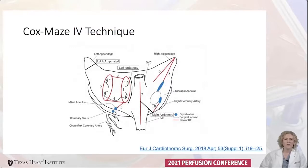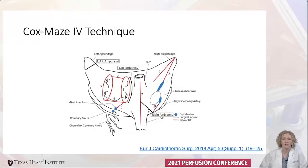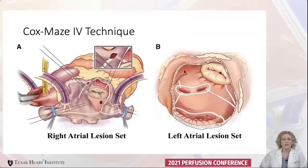The Cox-Maze 4 technique follows the same lesion lines as the Cut and Sew Cox-Maze 3, but uses a combination of alternate energy sources like bipolar radiofrequency and cryoablation to complete the full lesion set instead of all incisions. This makes for an easier, quicker, and safer operation. The Cox-Maze 4 replaces most of the Cox-Maze 3 incisions with radiofrequency or cryoablation.